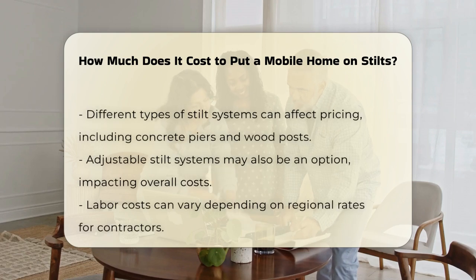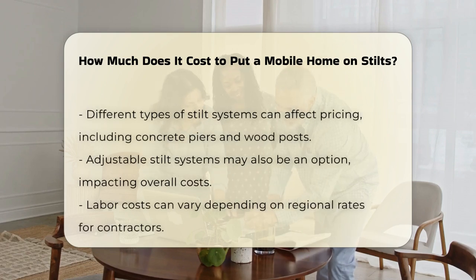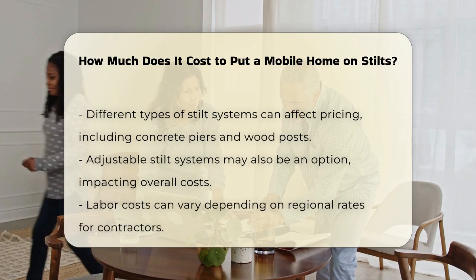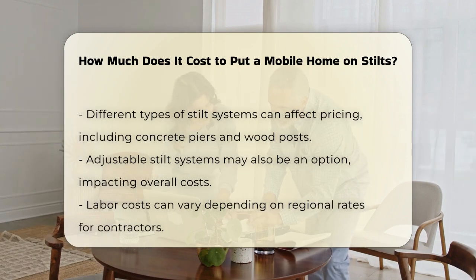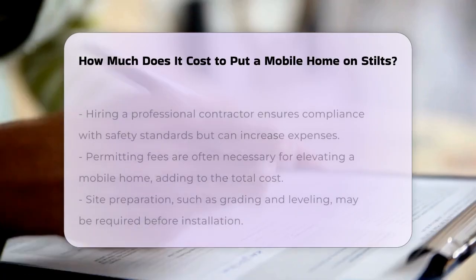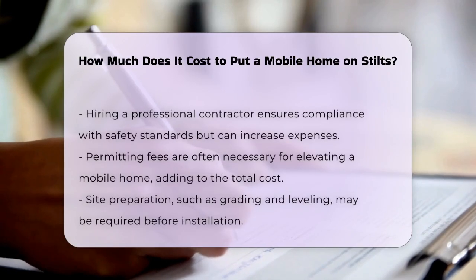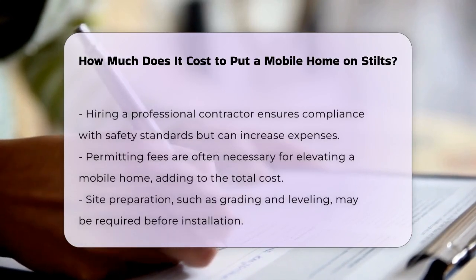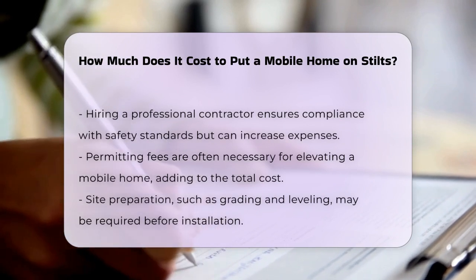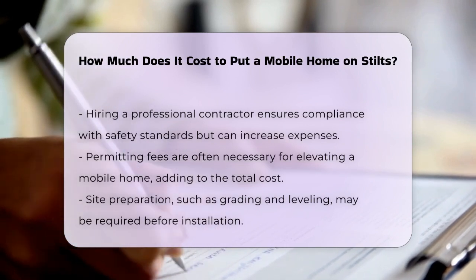The type of stilt system chosen also impacts pricing. Options include concrete piers, wood posts, or adjustable systems. Labor costs can fluctuate based on regional rates — hiring a professional contractor may ensure compliance with safety standards but can also raise the overall expense. Permitting fees are another consideration, as many areas require permits for elevating a mobile home, which can add to the total cost.